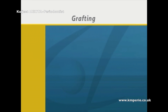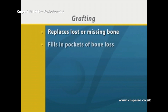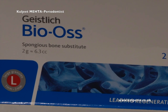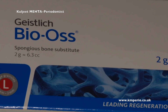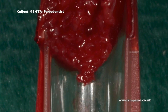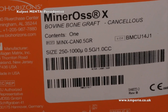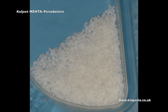with bone grafting, we can help your body replace lost or missing bone, fill in pockets of bone loss, and stimulate new bone and soft tissue growth. First we select the bone grafting material. We may use your own natural bone, bone tissue from another source, or artificial bone.